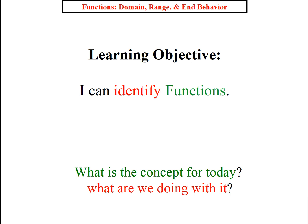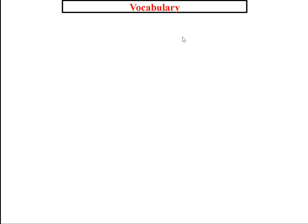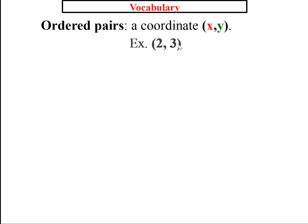Writing utensils down, look up to the screen. Today we're going to identify functions. Before we do, let's talk about ordered pairs. By now, you should know that an ordered pair is a coordinate — such as (2, 3). That ordered pair has two values: an X value and a Y value. The one on the left is X, so 2 is X, and the one on the right is Y, so 3 is Y.